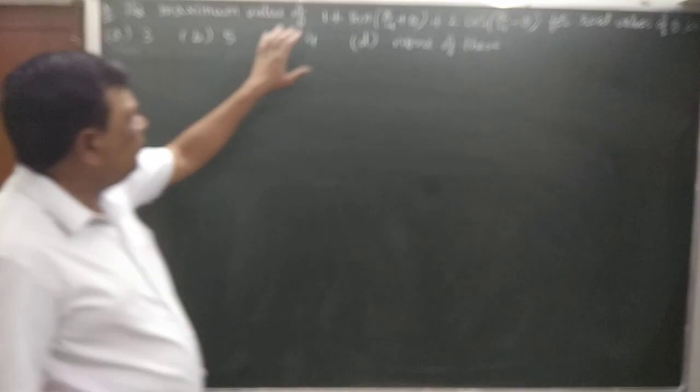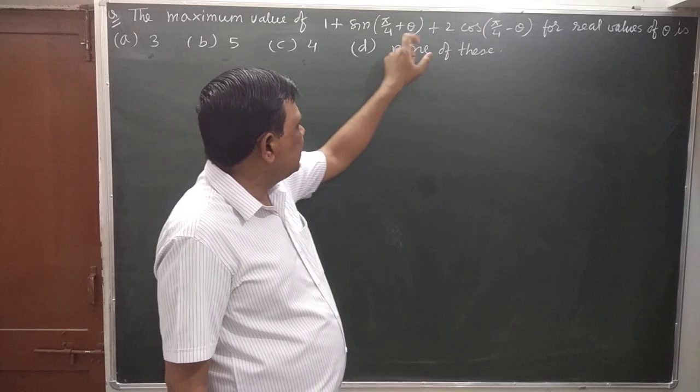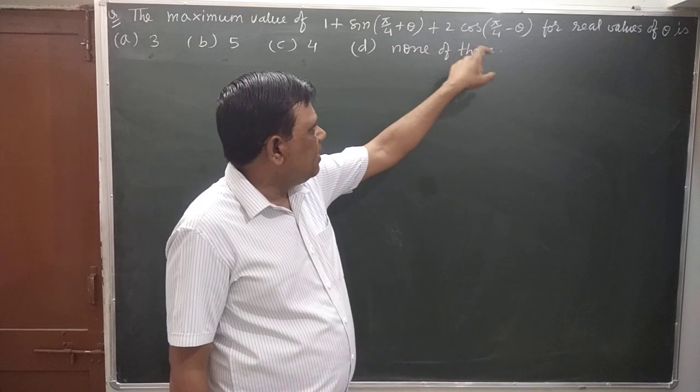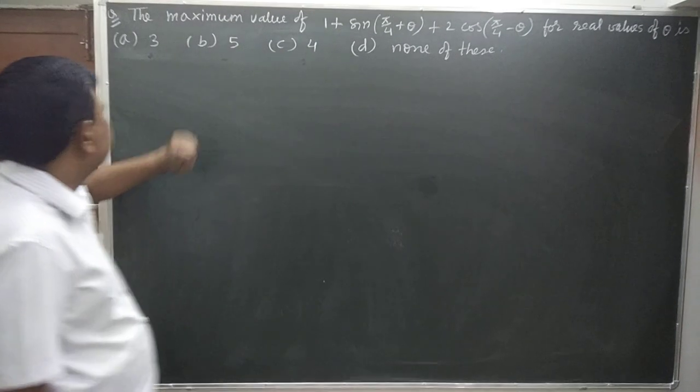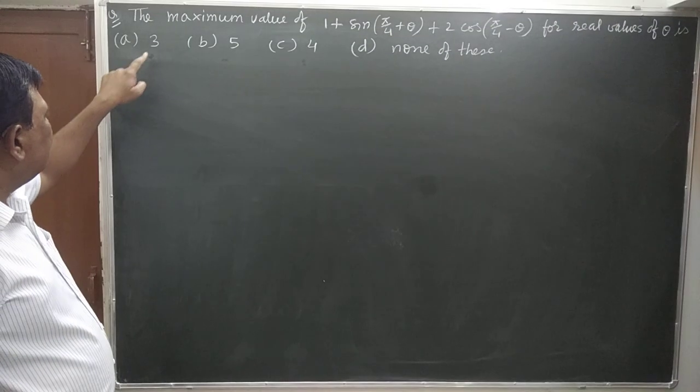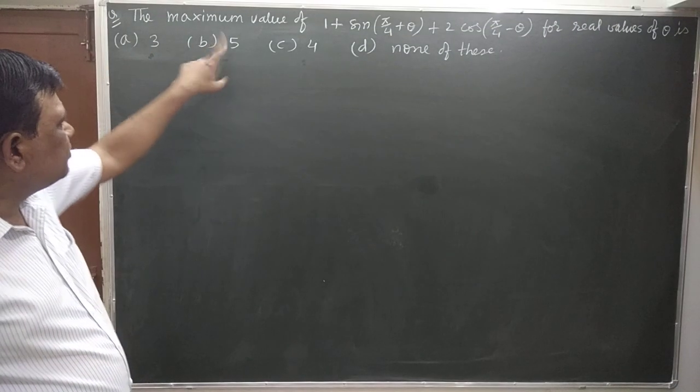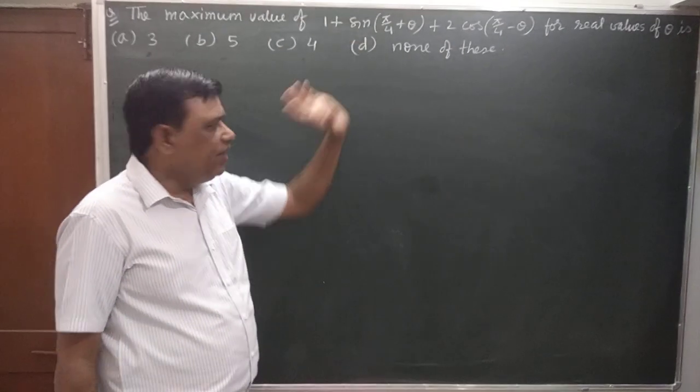The maximum value of 1 plus sin(π/4 + θ) plus 2 cos(π/4 - θ) for real values of θ is: option a is 3, option b is 5, option c is 4, option d is none of these.